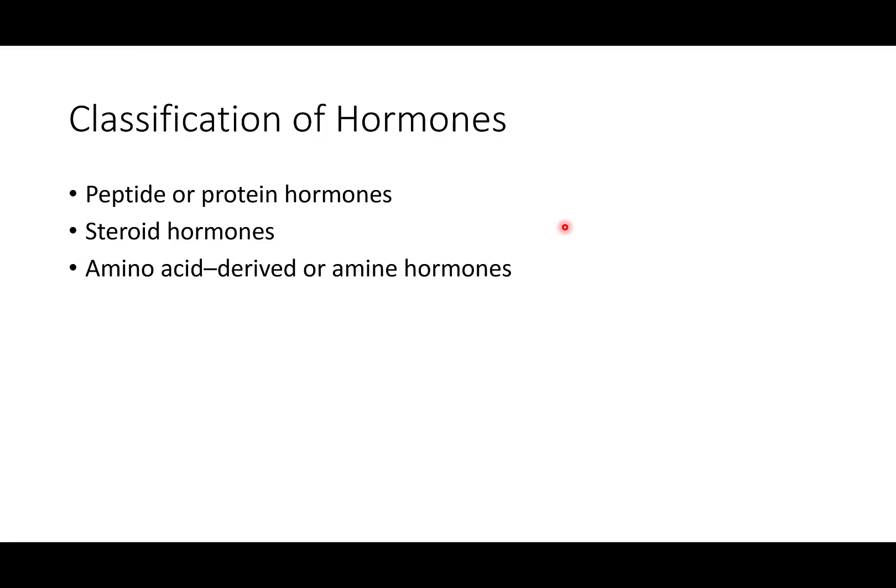How do we classify our hormones? There are three main types: peptide or protein hormones, steroid hormones, and amino acid-derived hormones, sometimes called amine hormones. This classification is based on their structure and how they are made.